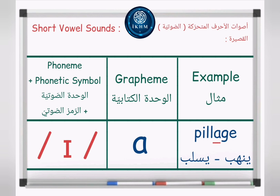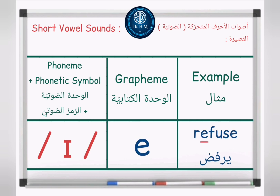Phoneme plus phonetic symbol: /ɪ/. Grapheme: letters A-E. Example — pillage, /ɪ/, pillage. Grapheme: letter E. Example — refuse, /ɪ/, refuse. Grapheme: letter I. Example — sit, /ɪ/, sit.